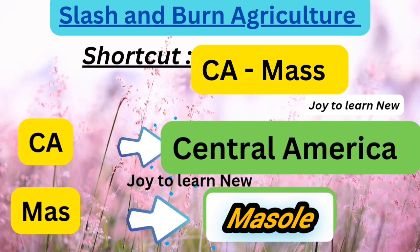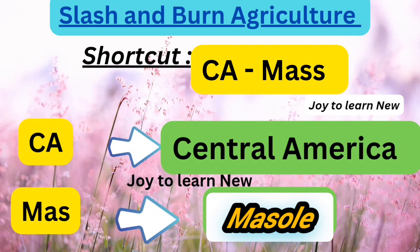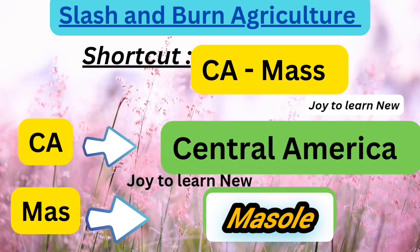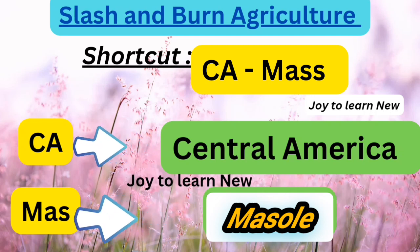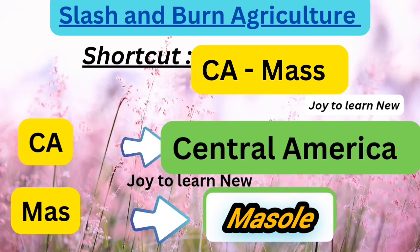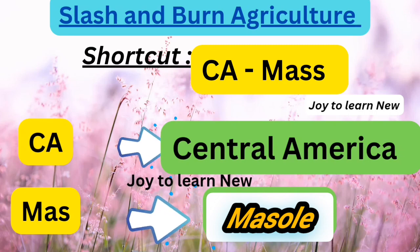The next shortcut is 'CA mass.' CA refers to Central America, and mass — MA-S — refers to Masas. So Masas is another name for slash and burn agriculture in Central America.